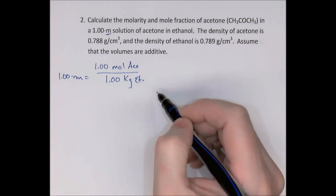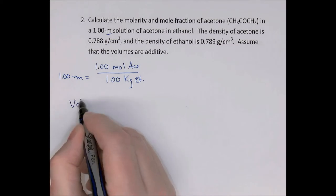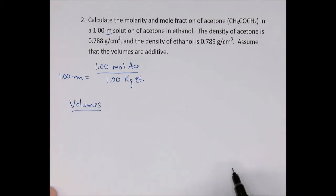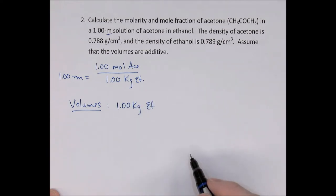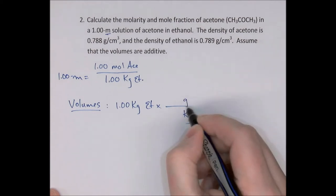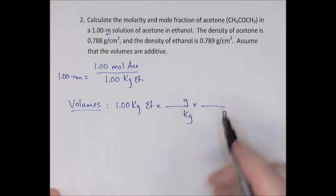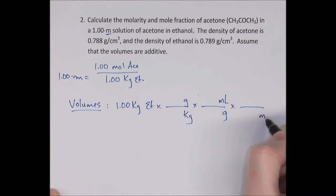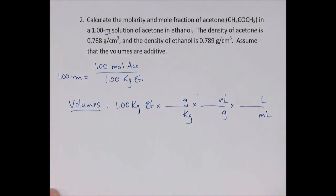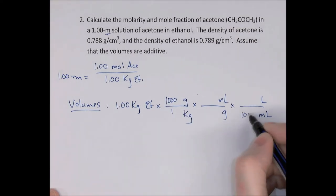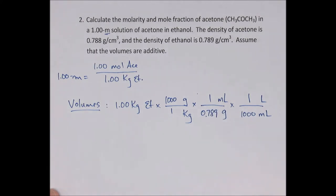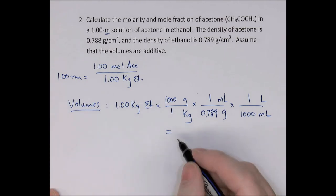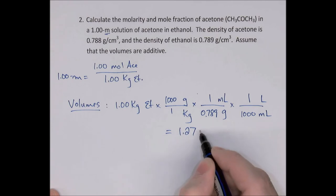We need the total volume of the solution to find molarity. Starting with 1 kg of ethanol: 1 kg × (1000 g/kg) ÷ (0.789 g/mL) ÷ (1000 mL/L) = 1.27 liters of ethanol. So in this 1 molal solution, 1 kilogram of ethanol occupies 1.27 liters.